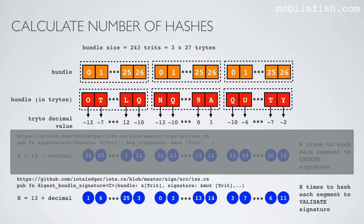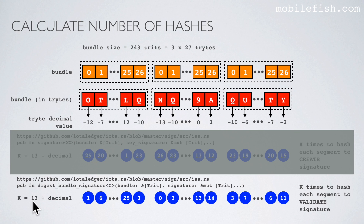Let's again calculate the number of hashes. Again we start with the bundle which consists of 243 trites — three times 27 trites. Here are 27 trites, here are 27 trites, and here are 27 trites. We convert each trite to its decimal value, then we do this calculation: 13 plus the decimal value. For example, 13 plus minus 12 is 1, 13 plus minus 7 is 6, etc. These values are needed to hash each segment to validate the signature.